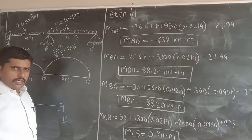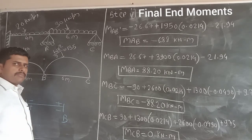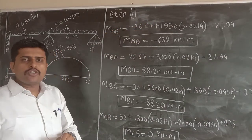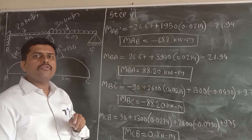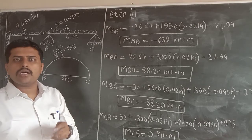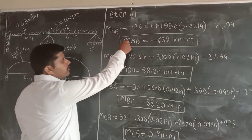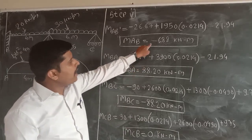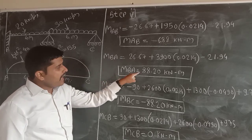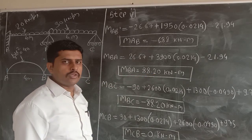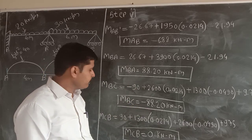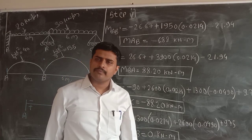After getting the values of theta B and theta C, we solve step 5: final end moments. Putting the values of theta B and theta C into all four slope deflection equations, we get: M_AB = minus 6.88 kNm, M_BA = plus 88.20 kNm, M_BC = minus 88.20 kNm, and M_CB = 0.00 kNm.